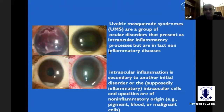Uveitis masquerade syndromes are a group of disorders where the inflammatory process is not the real thing. There is an underlying different cause which has led to this sort of an appearance.